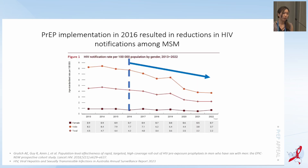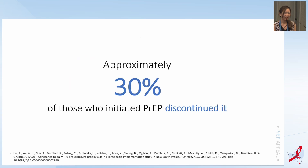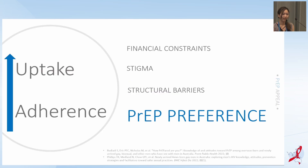Now let's look at the trend in HIV notification among these populations. There has been a reduction in HIV notification since PrEP implementation in 2016. It seems like we have a good result, but there is a problem. Recent research found that approximately 30% of those who initiated PrEP discontinued it. There are several factors that influence PrEP adherence and PrEP uptake, and in this study we will look at preferences for PrEP among MSM.